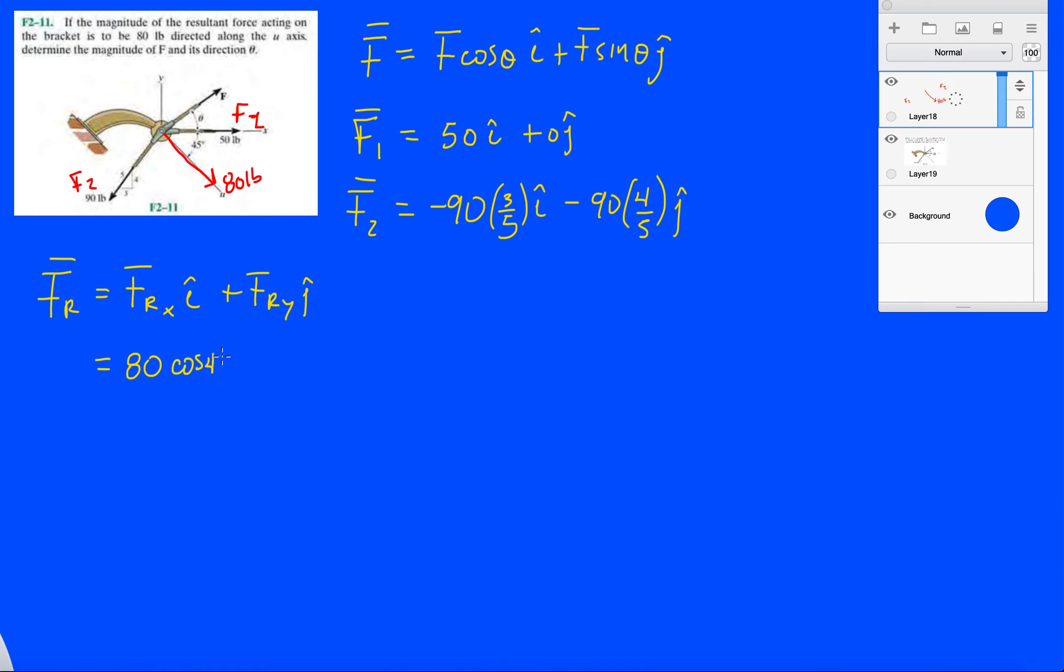And it's pointing to the right, so positive, and then it's pointing downwards. So minus 80 sine 45 j, and that's FR.